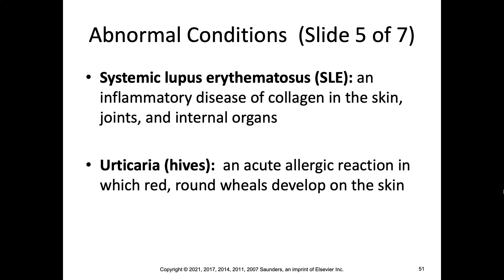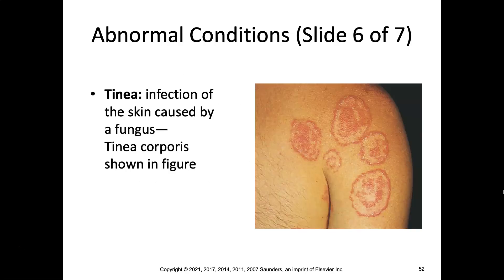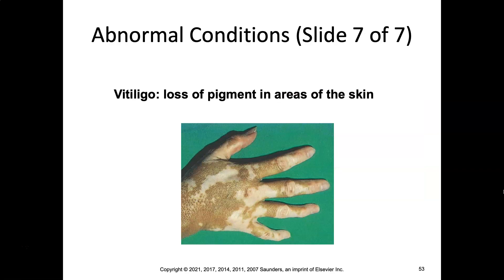Systemic lupus erythematosus — covered in last week's musculoskeletal lecture — is an inflammatory disease of collagen in the skin, joints, and internal organs, and does impact the skin significantly. Urticaria, or hives, is an acute allergic reaction where wheals develop on the skin — for example from a bee sting or a medication reaction. Tinea is an infection of the skin caused by a fungus; tinea corporis is shown here. Vitiligo is a loss of pigment in areas of the skin.